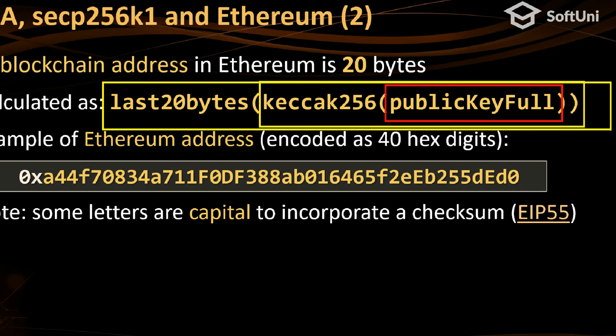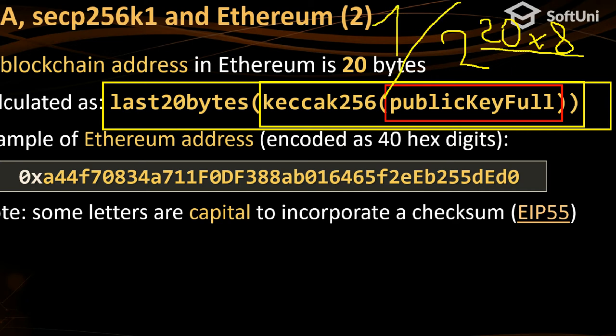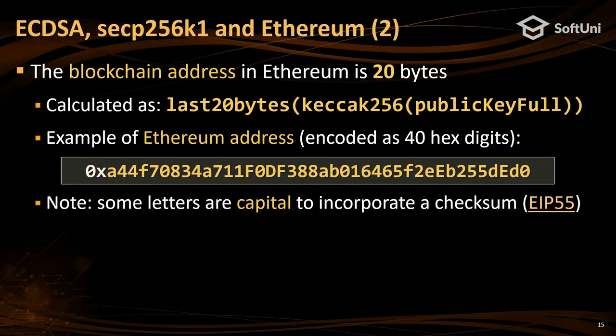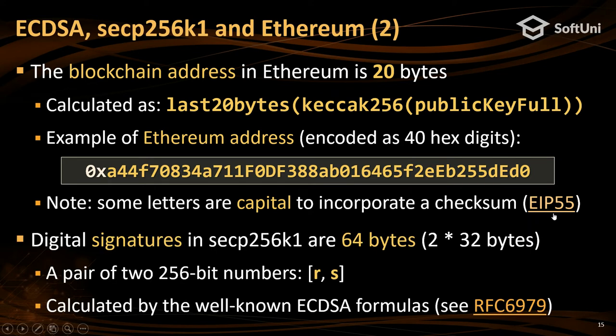We accept this because the chance of collision is 1 divided by 2 to the power of 160 (20 bytes × 8 bits). That is the chance of having the same wallet as some Bitcoin billionaire and spending their money. In Ethereum addresses, capital letters incorporate a checksum per EIP-55. If you make a mistake in one letter, the checksum fails, so you'll know your blockchain address is wrong.